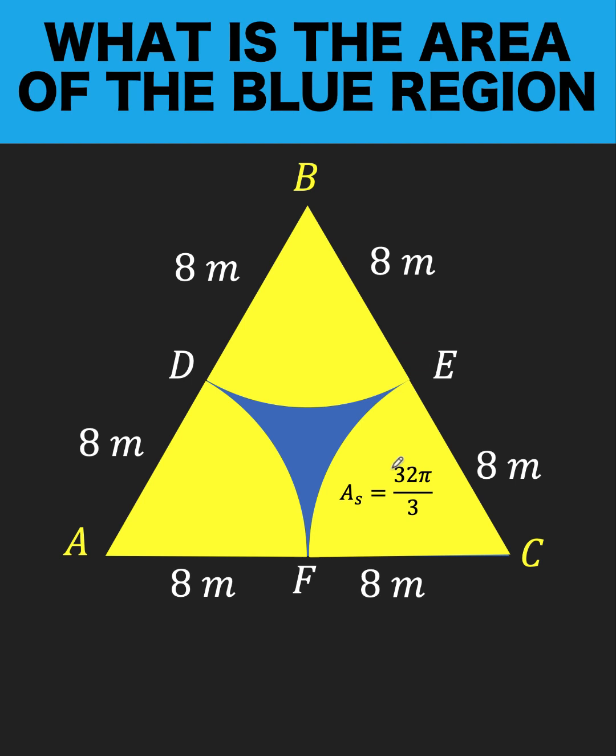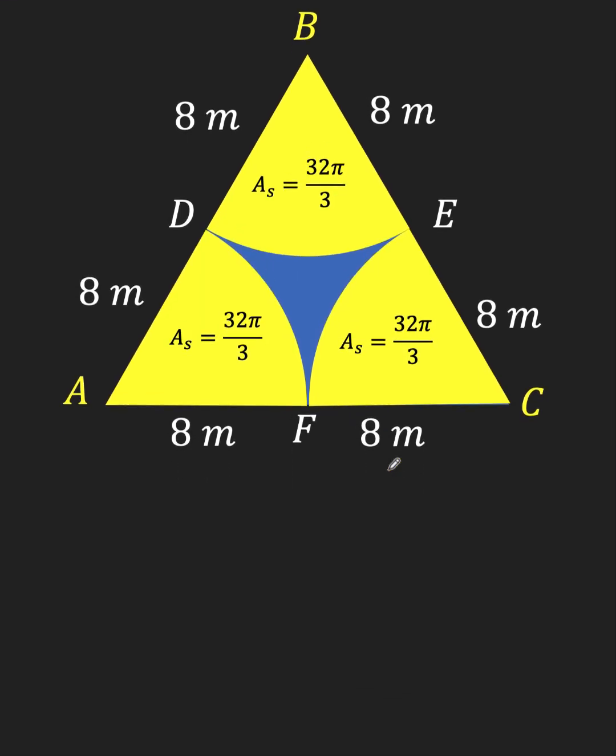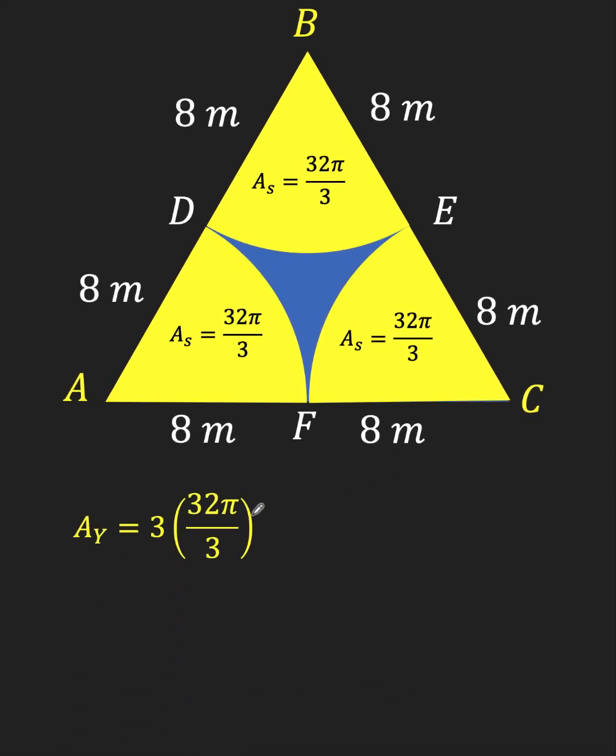Since all these three yellow sectors are congruent, then their areas must also be equal. And so, the total area that is shaded yellow is 3 times 32π over 3, because there are three sectors, and each sector has an area of 32π over 3.